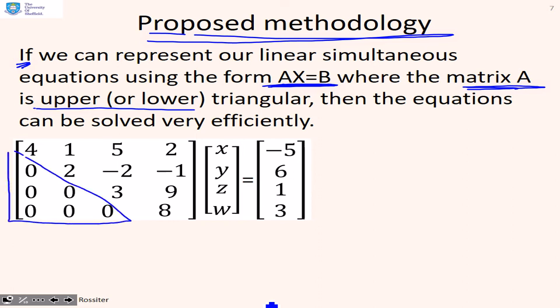So the proposed methodology that we're going to use is: if we can represent our linear simultaneous equations using the form Ax equals b, where the matrix A is upper or lower triangular, then the equations can be solved very efficiently. And you'll see with this one here again, we've got all these zeros, so we've got an upper triangular form. So here we could use the fourth row to solve for w.